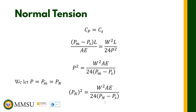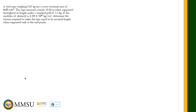But if your calculator has the shift-solve function, we no longer need to do trial and error — we can actually use shift-solve. We are going to illustrate this in the following example. A steel tape weighing 0.85 kilogram has a cross-sectional area of 0.05 cm squared. The tape measures exactly 30 meters when supported throughout its length and under a standard pull of 5.5 kilogram. The modulus of elasticity is 2.10 times 10 raised to 6 kilogram per square centimeter. Determine the tension required to make the tape equal to its nominal length when supported only at its ends.